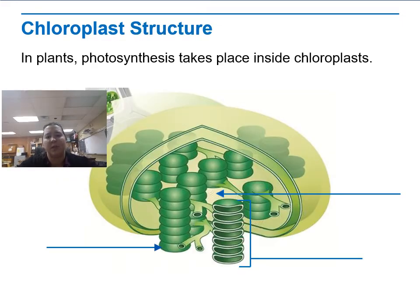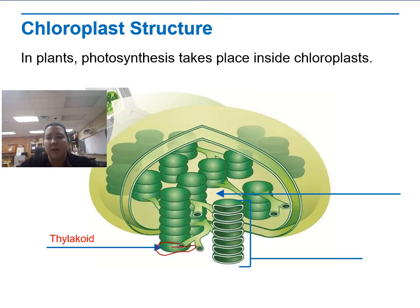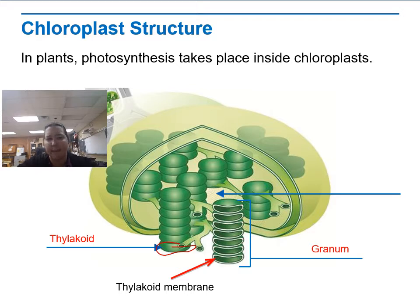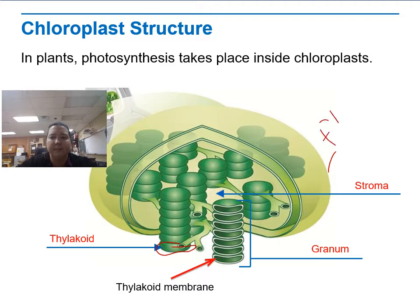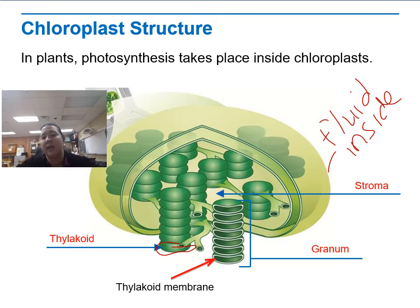The chloroplast structure has three main parts. The chloroplast is inside a plant cell. We have the thylakoid, which are these little pillow-like structures. We have stacks of thylakoids called grana, or granum for singular. Those thylakoid membranes are basically just places for this reaction to happen. Last but not least, we have stroma, which is the fluid inside the chloroplast between all of the thylakoids — kind of like the cell's cytoplasm, but inside the chloroplast.